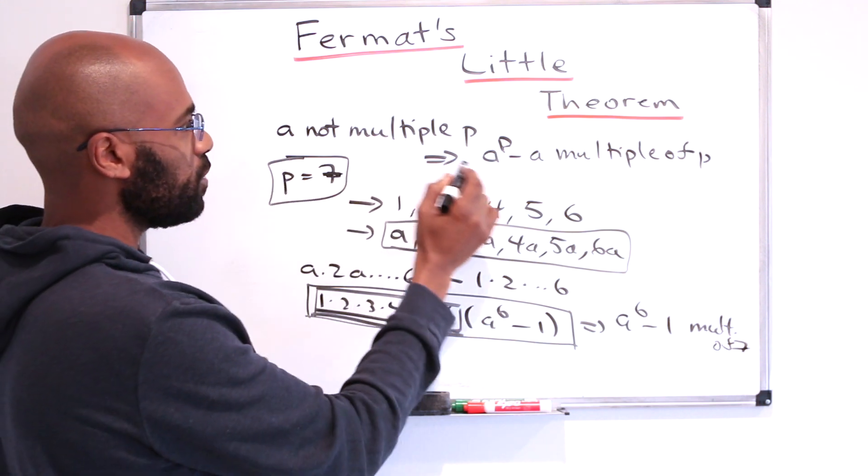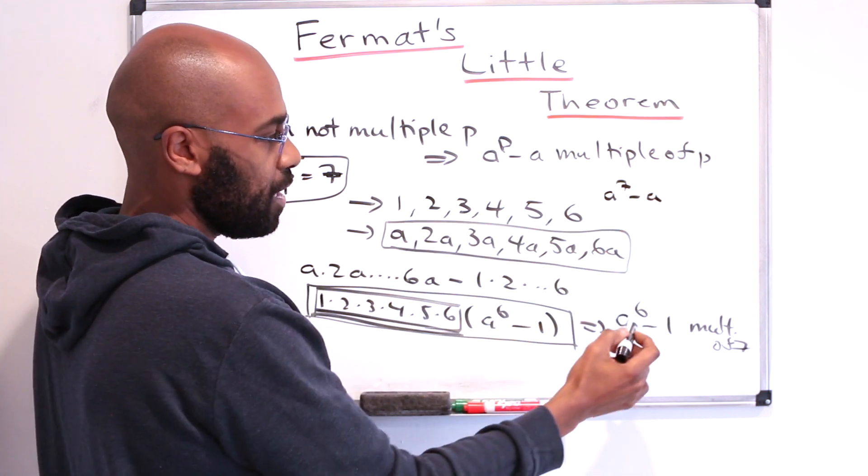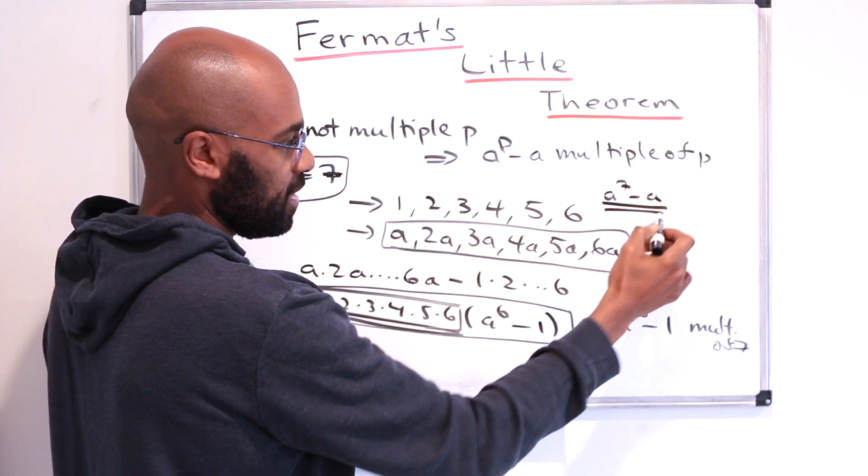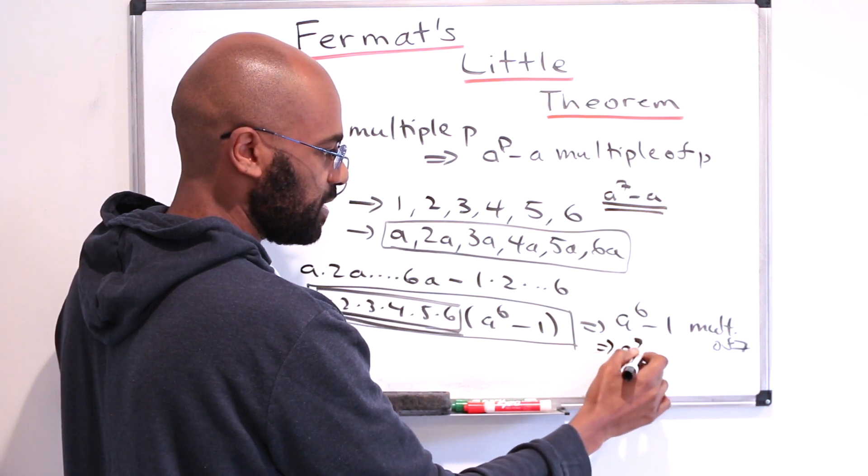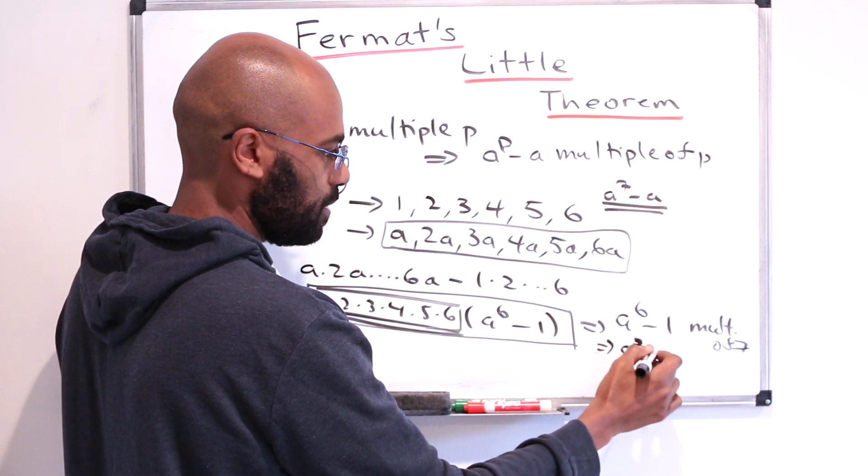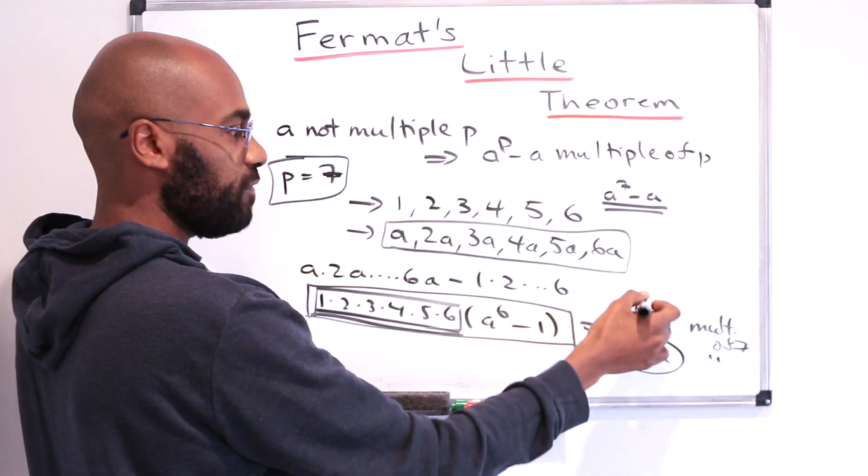Now our goal was to prove that a to the 7 minus a is a multiple of 7. Luckily this thing is a times this. So if this is a multiple of 7, then this thing has to be a multiple of 7 because this is a multiple of this.